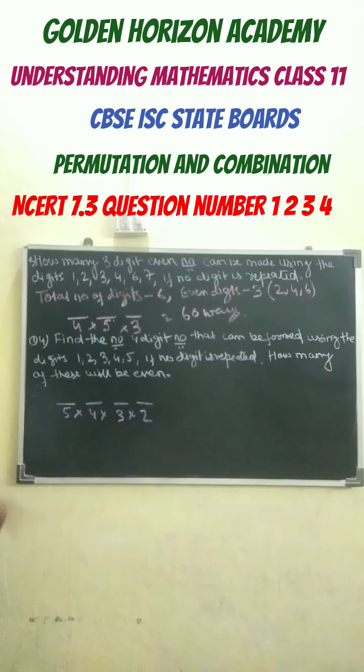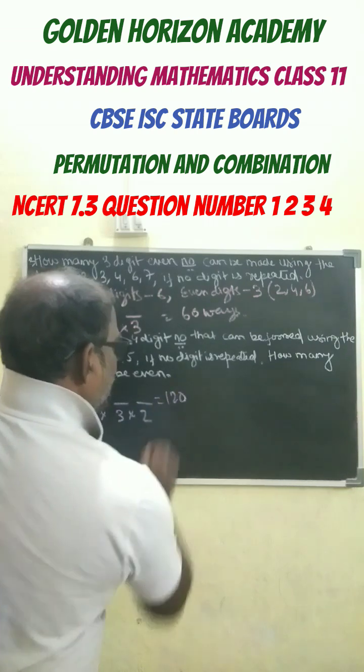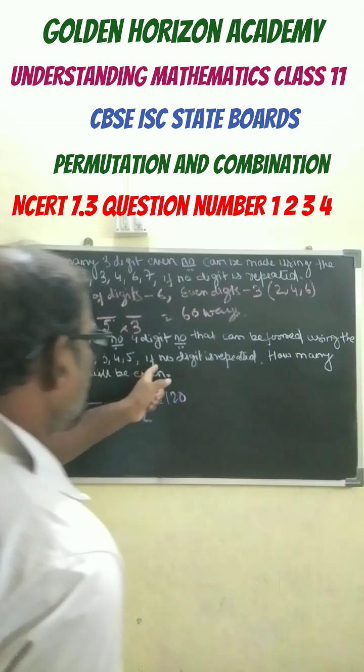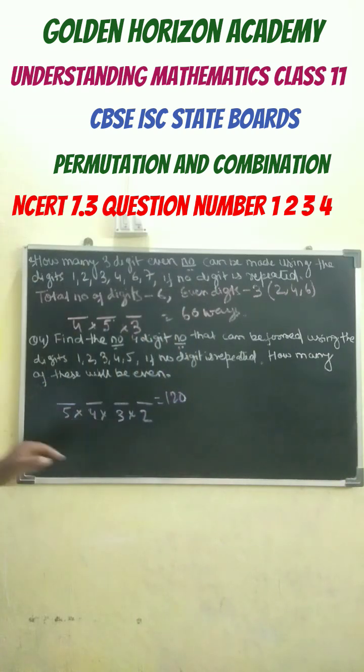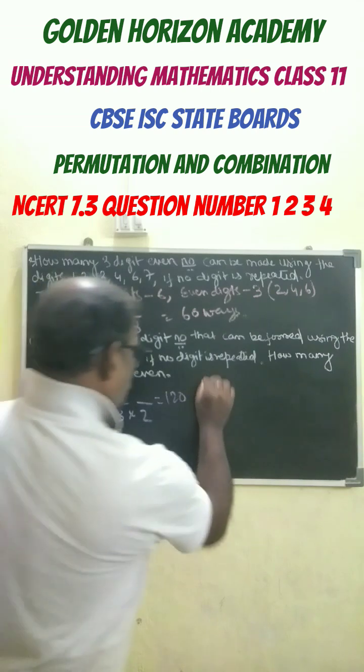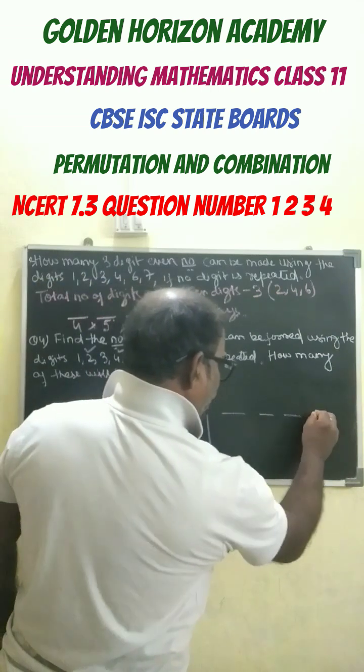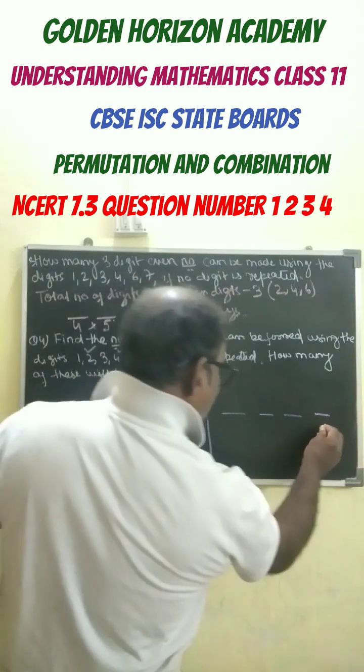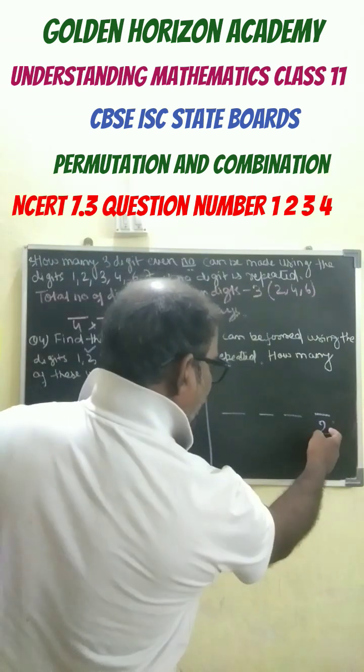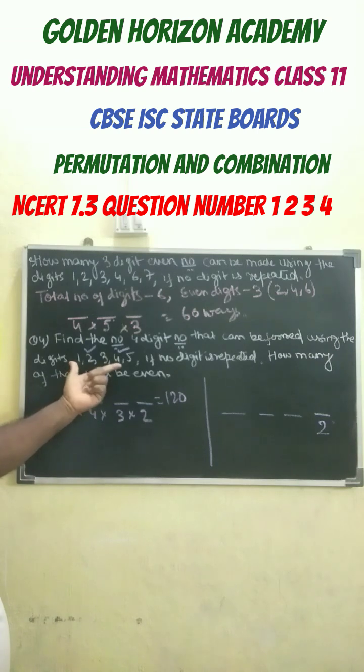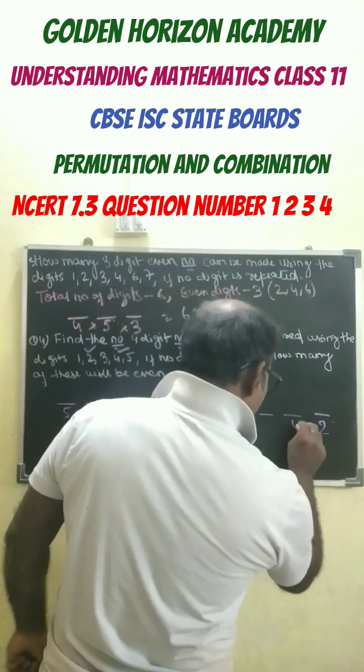Next, if no digit is repeated, how many of these will be even? Here the even digits are two and four. In the units place we put it in two ways. Then from one, two, three, four, five - out of five digits, one digit we've already put here, so the next position has four remaining, so this can be filled in four ways.